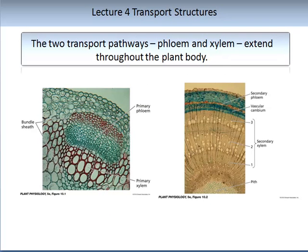Once the solute has passed the Casparian strip, it can enter the transport structures. There are two principal transport structures: the phloem and the xylem. Nutrients, minerals and water tend to travel in the xylem. The images on the slide show phloem and xylem that have been selectively stained to show the different components. You will note the bundle sheath, primary phloem, primary xylem, secondary phloem, vascular cambium, secondary xylem and the pith. We will deal with the phloem in further lectures.